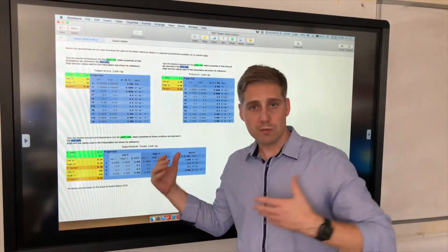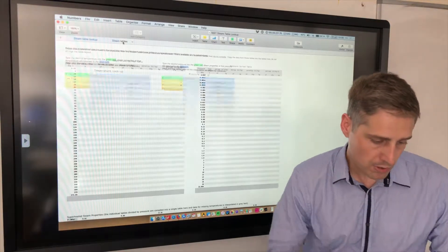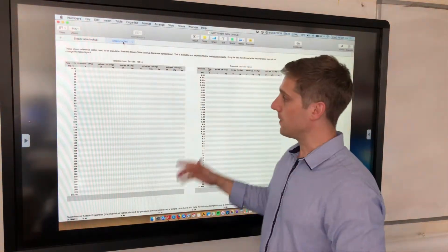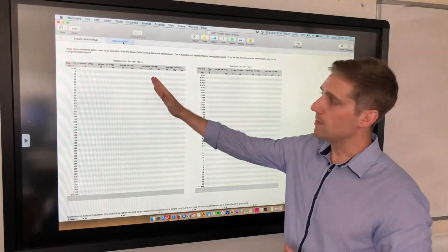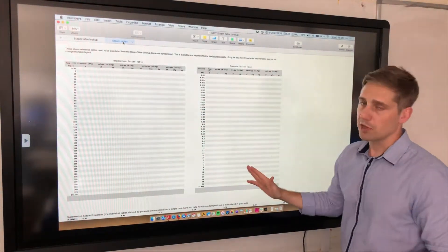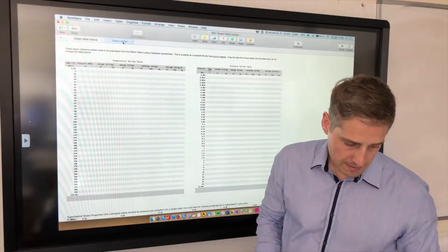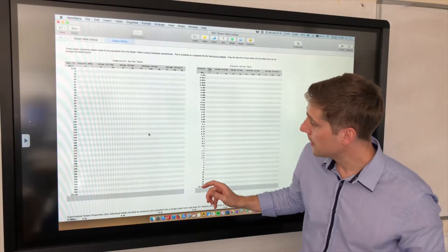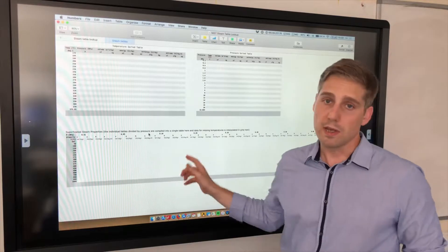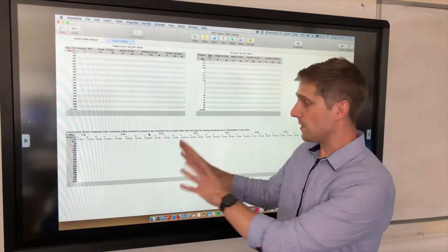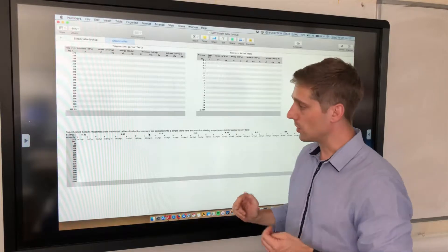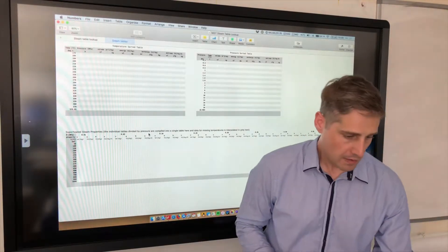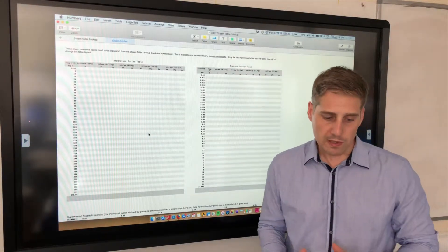Before I can show you how it works, we need to put the data from the NIST webbook into here. I've got three tables in here. There's the temperature sorted table, the pressure sorted table, and then down here, we have the superheated table. You'll see that this is a little bit different to what you would get in the NIST webbook and you'll see why when I show you the functionality.